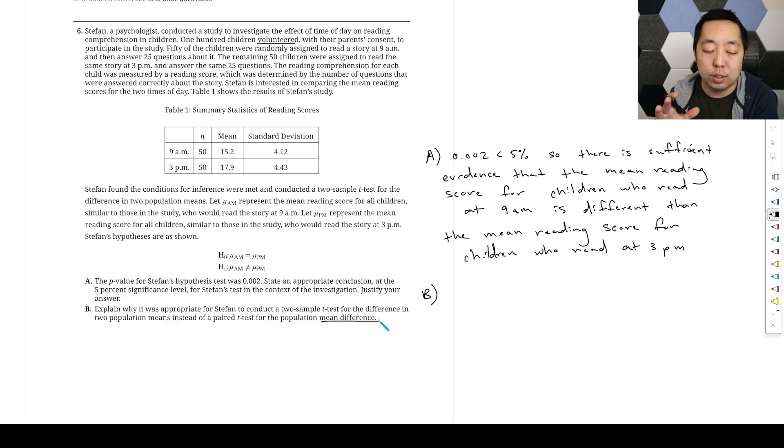Okay, because the paired t-test has to do with whether or not they're dependent, like they're connected. Like one data point for the people who read in the afternoon, it's not the same kid. So a paired t-test would be more appropriate if it was the same kid reading in the morning and the afternoon. But the big thing is the two samples are independent.